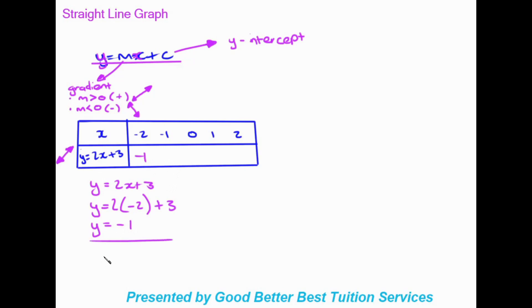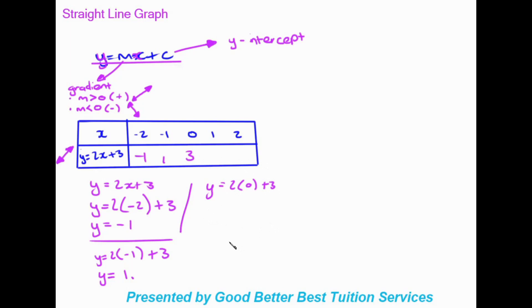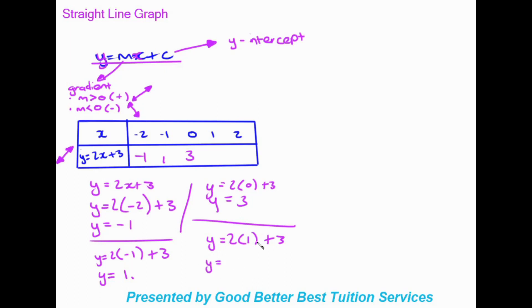Now finishing the table: 2 times negative 2 gives us negative 4, plus 3 gives us negative 1. Then for x equals negative 1 the answer is positive 1. For x equals 0 we get 3. Then y equals 2 times 1 plus 3 gives us 2 plus 3, which is 5. And y equals 2 times 2 plus 3 gives us a final answer of 7.